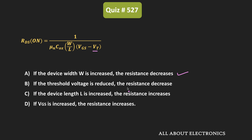The second statement says: if the threshold voltage VT is reduced, then the resistance will decrease. This is also true, because when VT reduces, the term (VGS − VT) increases, and as that term increases, RDS(on) reduces. So the second statement is also correct.